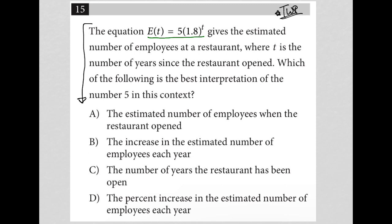So if a restaurant's been open for 10 years, I put a 10 here, replacing that t with 10. I do all the math here and what would pop out would be the number of employees we expect that restaurant to have. That's my understanding of what I just read. So the question goes on to say, which of the following is the best interpretation of the number 5 in this context?